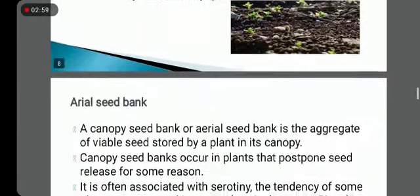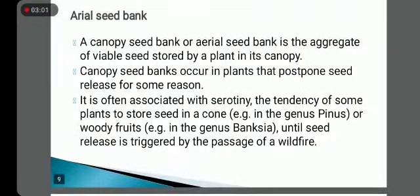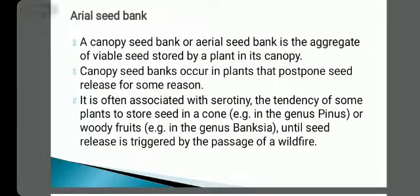The second type is the aerial seed bank. A canopy seed bank, or aerial seed bank, is the aggregate of viable seeds stored by a plant in its canopy. The canopy is the outer covering that protects from harsh weather. Canopy seed banks occur in plants that postpone seed release for some reason.